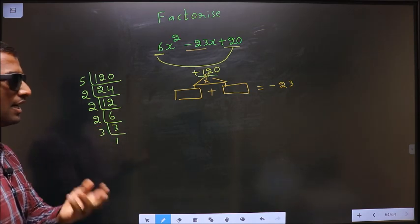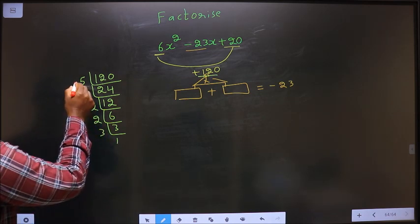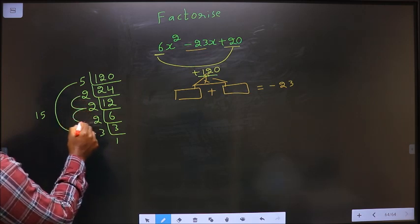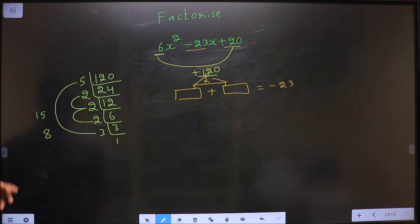So now, the two numbers are 5 into 3, 15 and 2 into 2, 4, 4 into 2, 8. 15 plus 8 is 23, 15 into 8 is 120.